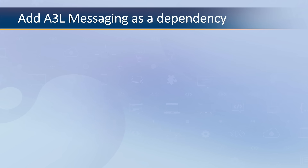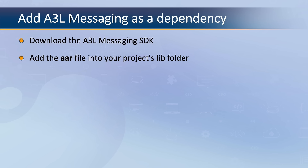Next you will need to add A3L messaging as a dependency. First, download the A3L messaging SDK — the link can be found on the developer portal under SDK downloads or in the description below. Then add the AAR file into your project's libs folder. This can be done through Android Studio from the project pane. Select project view and expand the app folder. Create a libs folder if it doesn't exist and add the A3L messaging AAR to the libs folder.